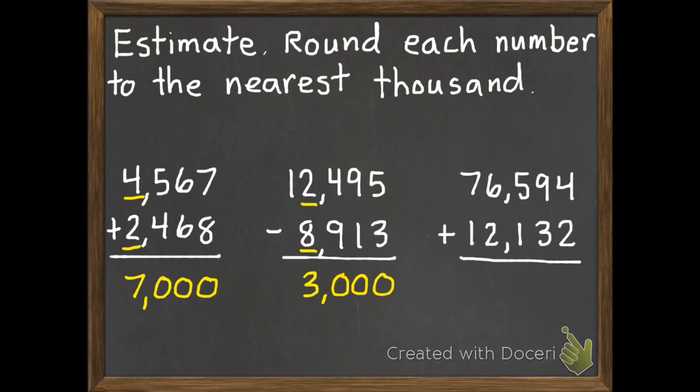And our third practice problem: our first number is going to round up to 77,000, our second number will stay at 12,000. So 77,000 plus 12,000 equals 89,000.